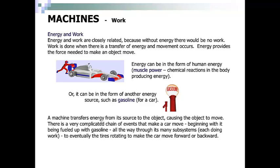A machine transfers energy from its source to the object, causing the object to move. There is a complicated chain of events that make a car move, beginning with being fueled up with gasoline, all the way through its many subsystems, each doing work, eventually to the tires rotating to make the car move forwards and backwards.